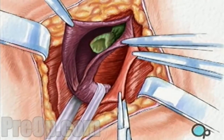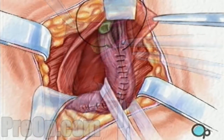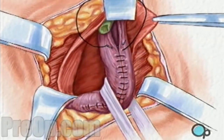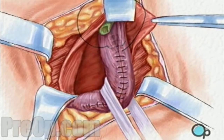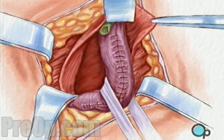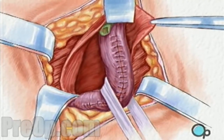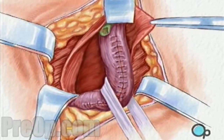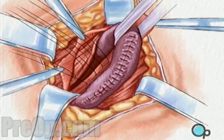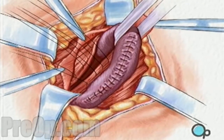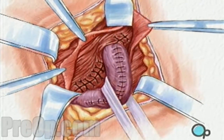After this procedure, the surgeon will close the inguinal canal with sutures, as we can see in this picture. During this time, if there is any defect or weakness in the muscle tissue, the surgeon needs to repair it in order to prevent the risk of recurrence of the hernia.